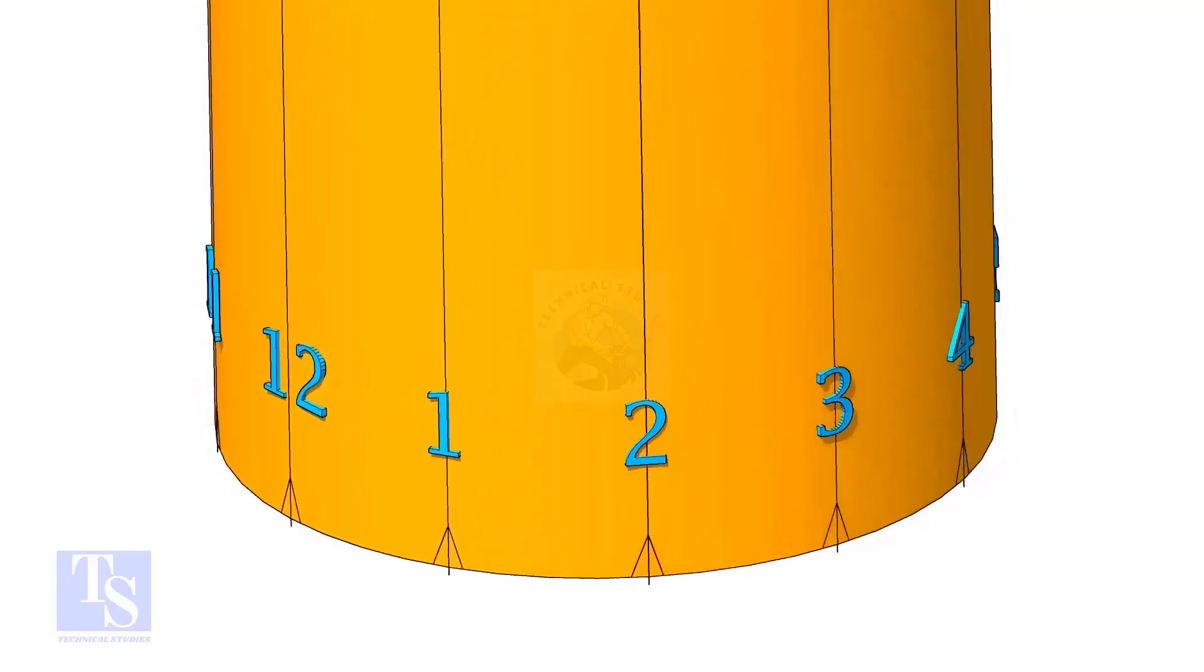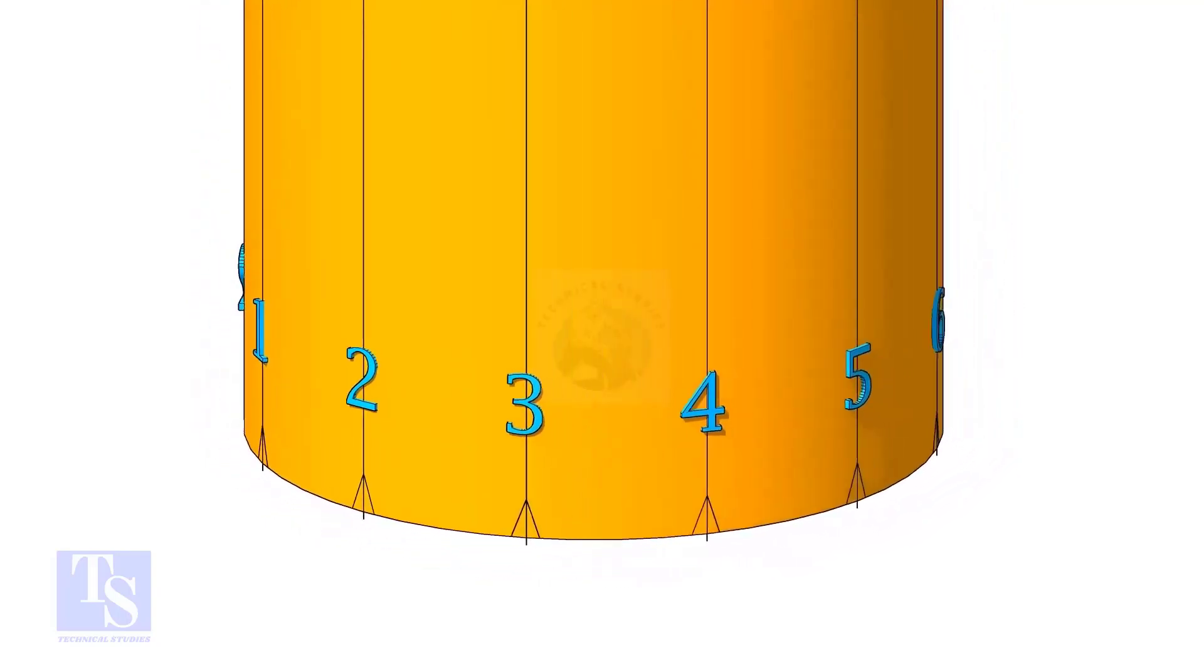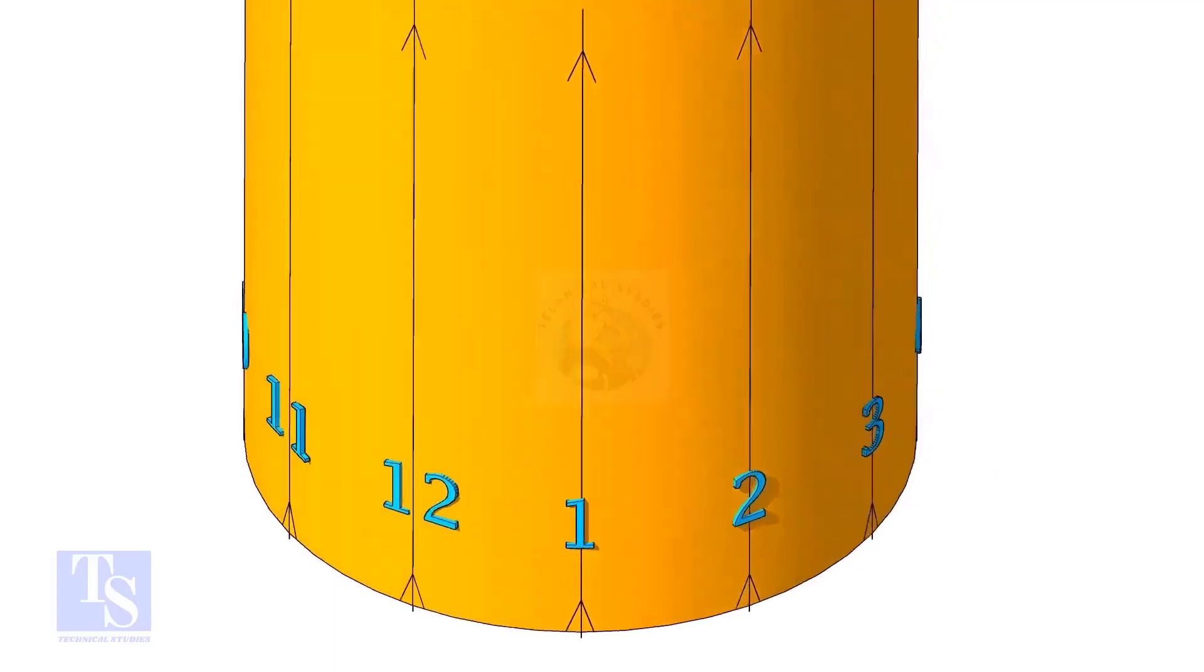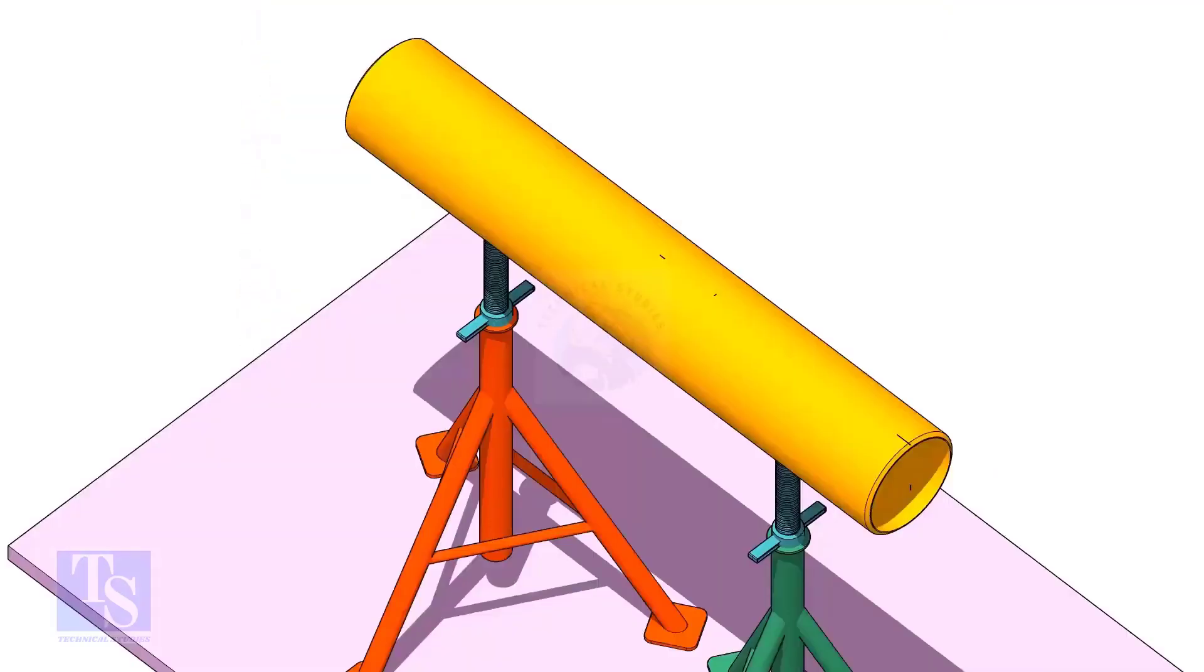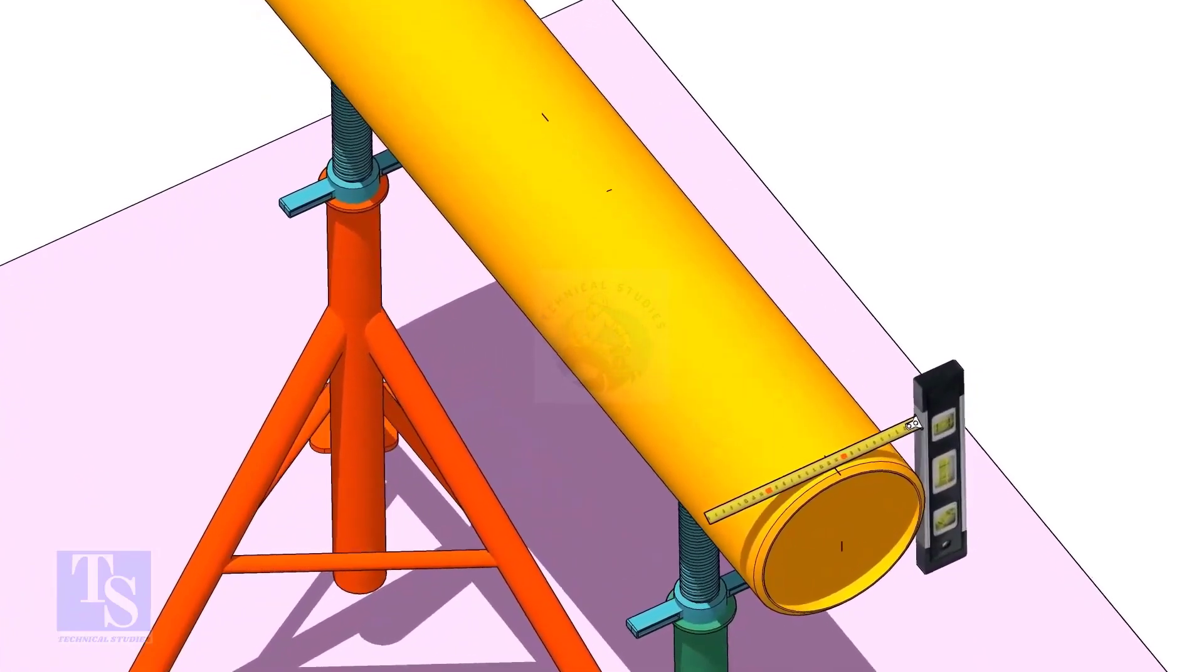Divide the branch pipe into equal parts. In this case, I divide the pipe into 12 parts. Mark the center line of the header on the top and the bottom.